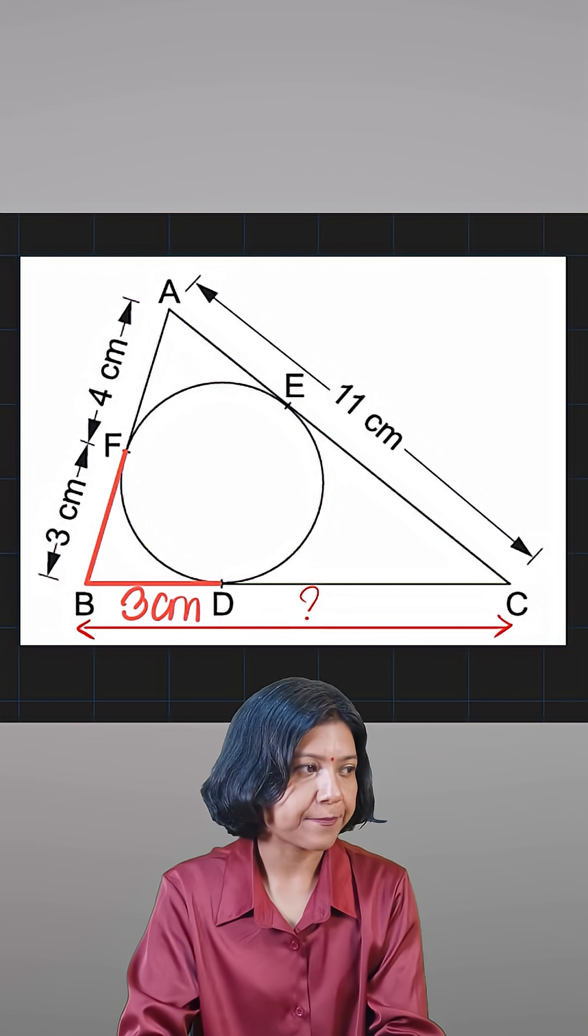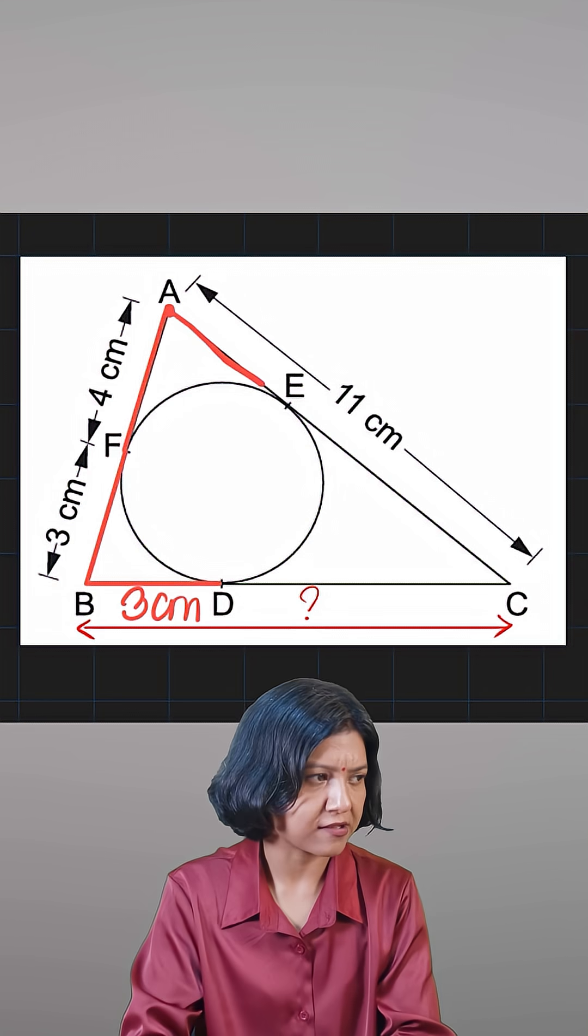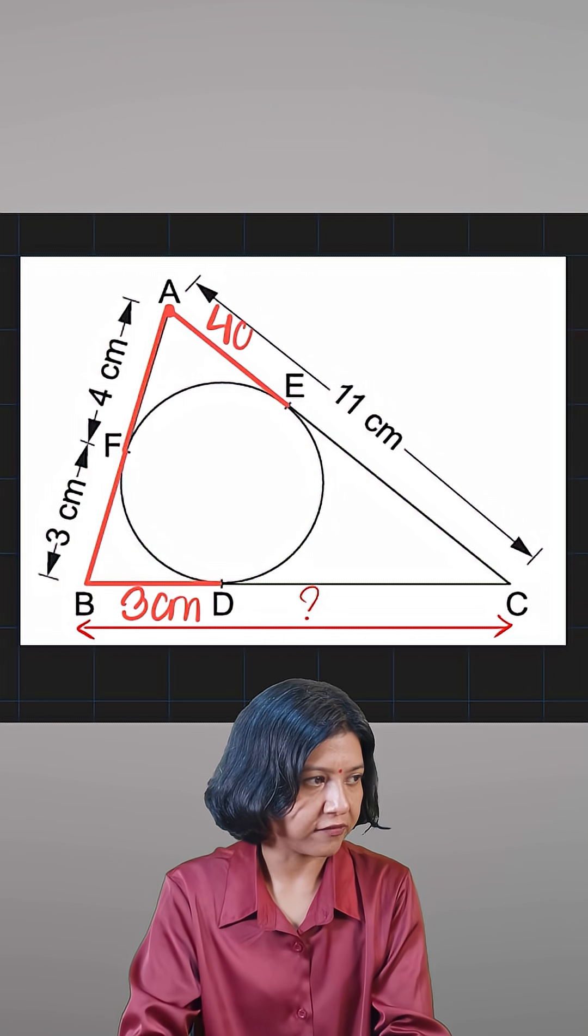If you now go to point A, from point A you have AF as one tangent and the other tangent is AE. So their lengths also have to be equal. So if this is 4, this has to be 4.